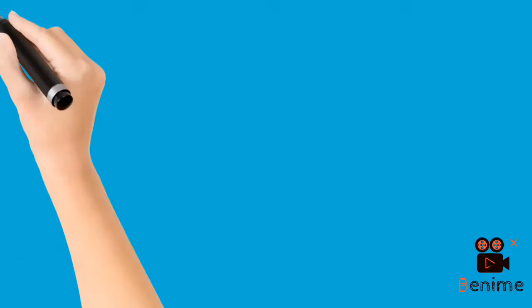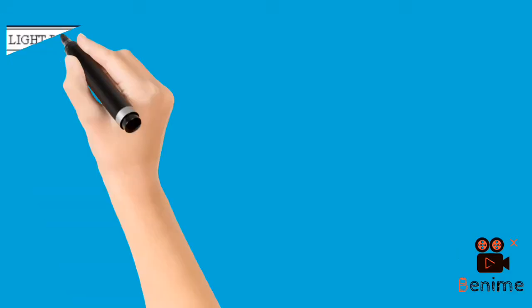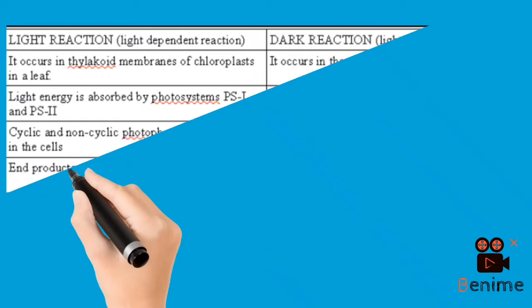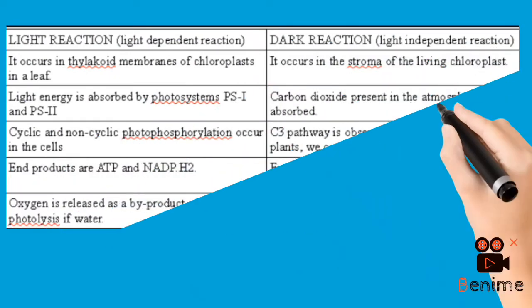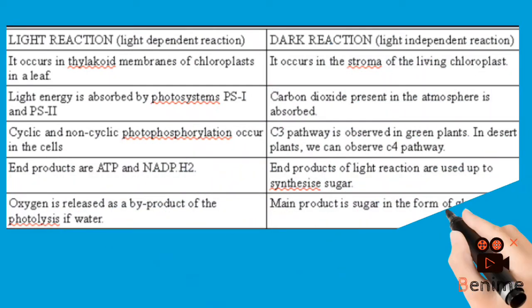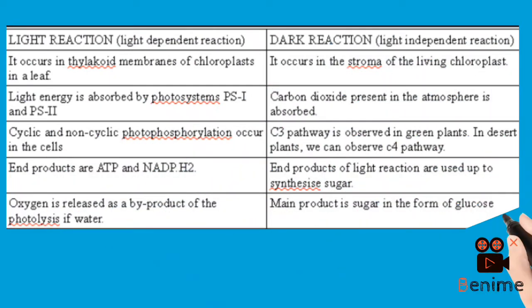Let us look at the comparison between the light reaction stage and the dark reaction stage. The light stage occurs in the thylakoid membrane of the chloroplast, while the dark stage occurs in the stroma of the chloroplast. Light energy is absorbed in the light stage, while carbon dioxide is absorbed from the atmosphere in the dark stage.